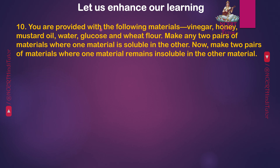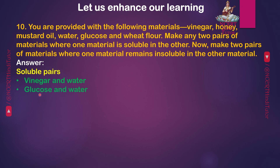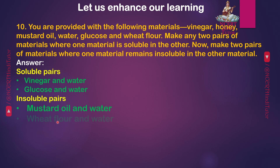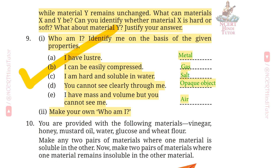Q10: You are provided with the following materials — Vinegar, Honey, Mustard Oil, Water, Glucose, and Wheat Flour. Make any two pairs of materials where one material is soluble in the other, and two pairs where one material remains insoluble in the other. Answer — Soluble pairs: Vinegar and water; Glucose and water. Insoluble pairs: Mustard oil and water; Wheat flour and water. We have now completed all the question answers from this chapter.